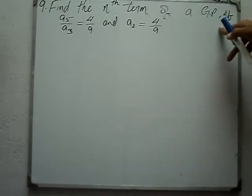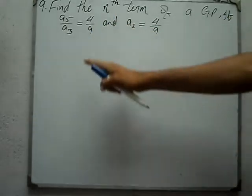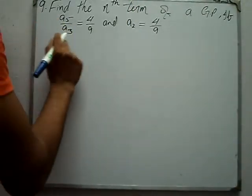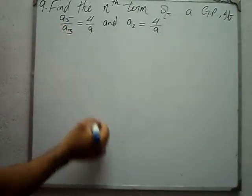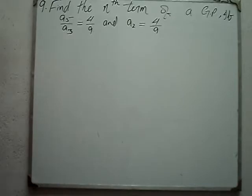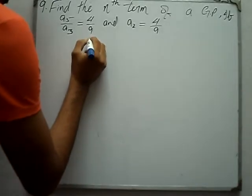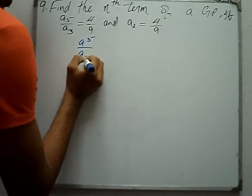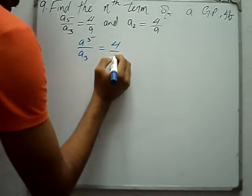In a geometric progression, a5 over a3 is equal to 4 over 9. We will start by finding R, the common ratio, and find the nth term.